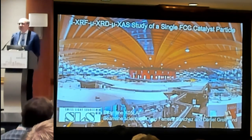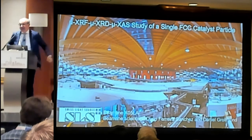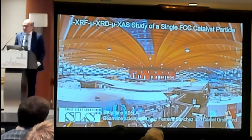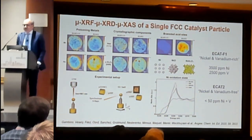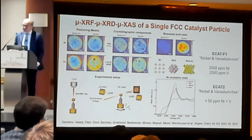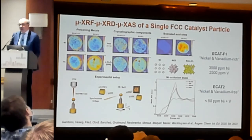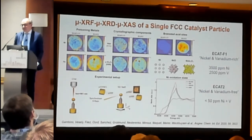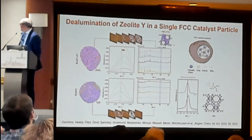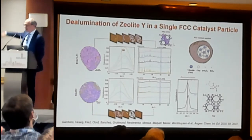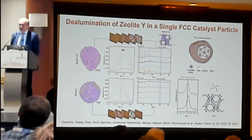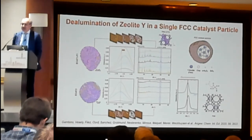I want to introduce one more technique — X-ray absorption spectroscopy and X-ray diffraction — where you can follow zeolite dealumination. The zeolite dealumination is very interesting because you can follow with X-ray diffraction the spatial result of what is happening. We had the luck of having a nickel and vanadium-rich sample and a nickel and vanadium-free sample. By comparing them — the rich one is the top set of X-ray diffraction patterns and the bottom one is the free sample — you can clearly see dealumination.